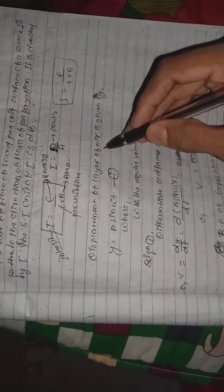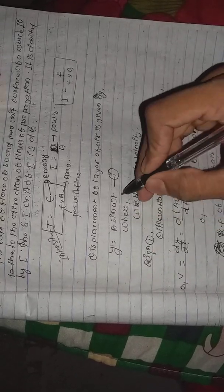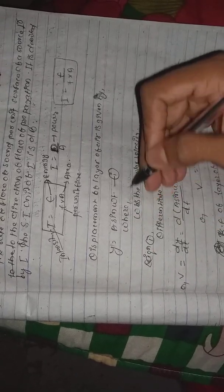The formula for intensity of sound - the displacement of a layer of air is given by the equation. The intensity of sound for a given frequency is directly proportional to the square of amplitude. The displacement of a layer of air is given by y equals A sin omega t, where omega is the angular velocity.